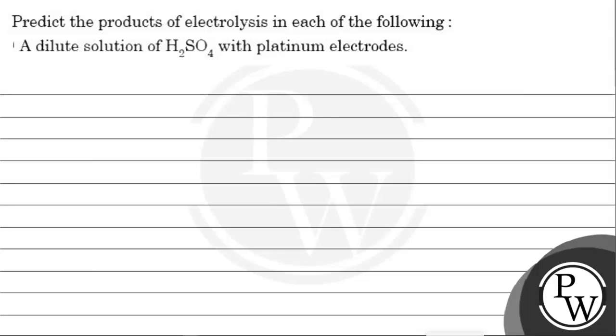Hello kids, let's read this question: predict the products of electrolysis of each of the following — a dilute solution of H₂SO₄ with platinum electrodes.